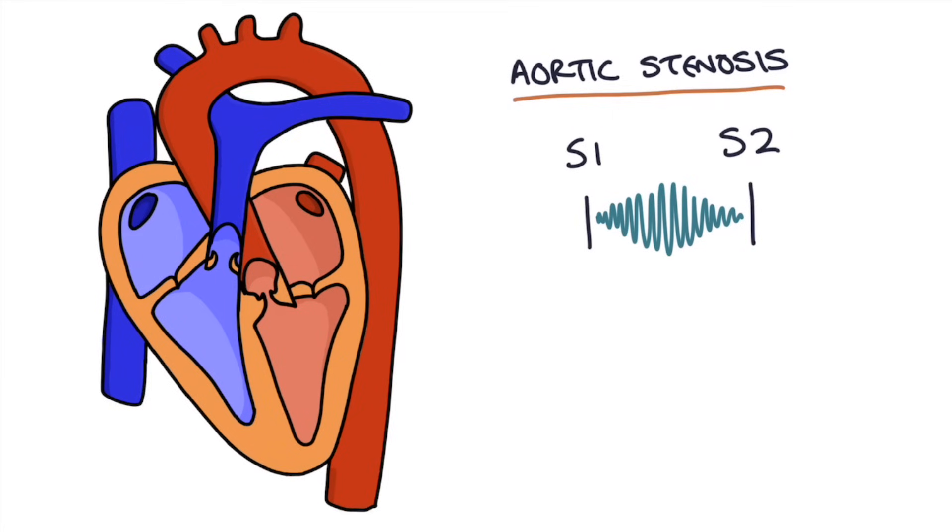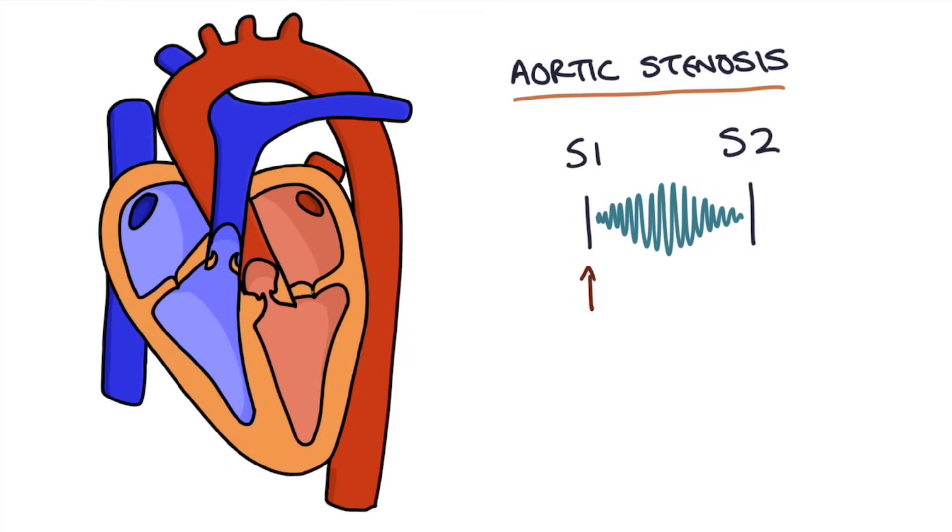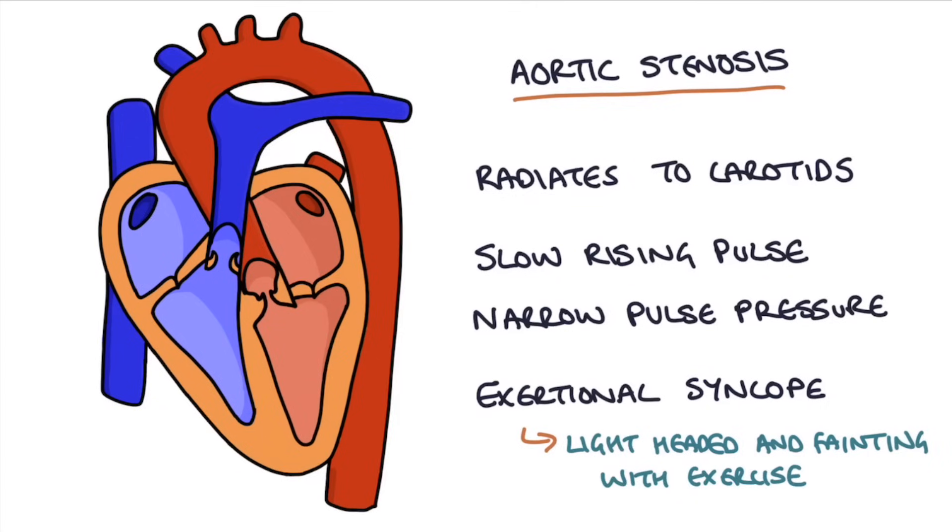It causes a murmur that sounds a bit like burr dub. See if you can hear it. There's a few other signs that you'll find in a patient with aortic stenosis. The murmur will radiate up to the carotids as the turbulence continues up into the neck. So you can put your stethoscope over the carotid arteries and listen for a murmur there. It's also associated with a slow rising pulse and a narrow pulse pressure. So when you palpate the pulse it will be slow to rise and when you do the blood pressure the systolic and diastolic pressure will be quite close to each other. Patients with aortic stenosis also have symptoms of exertional syncope. This is lightheadedness and fainting when exercising, and this is due to difficulty maintaining good flow of blood to the brain through that narrow valve.